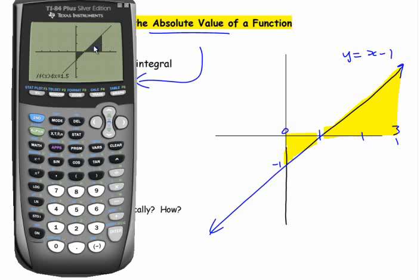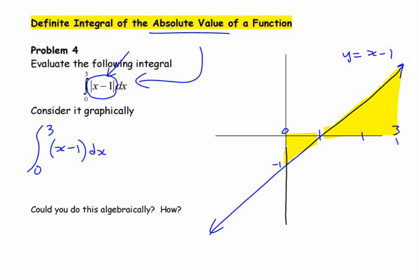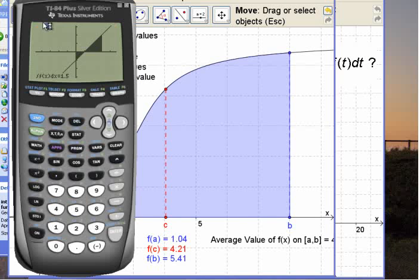Now when it does the area there, remember how is it going to calculate this? The area, this integral that it gives you, 1.5, that's whatever this is. It's considering that this is positive and this is negative.